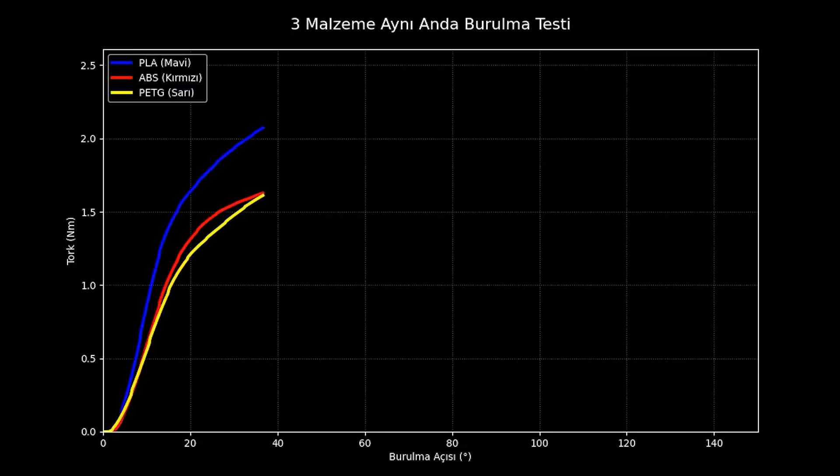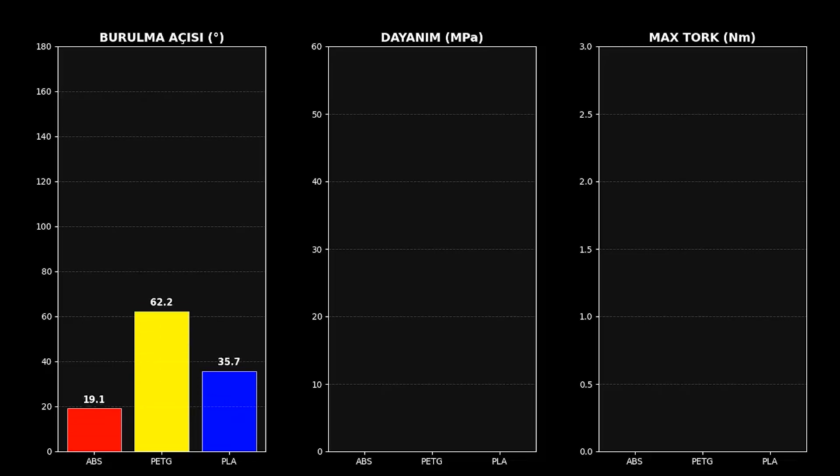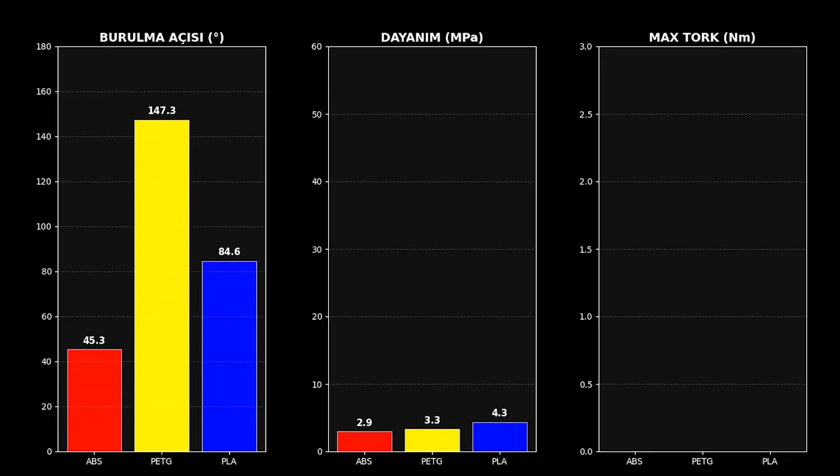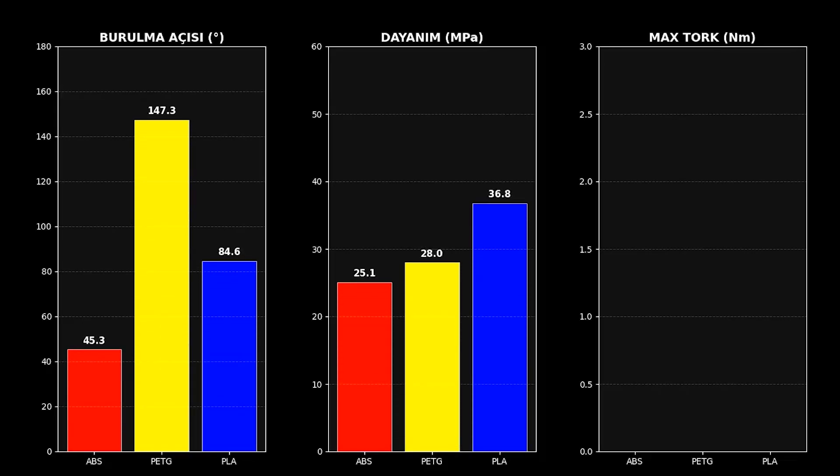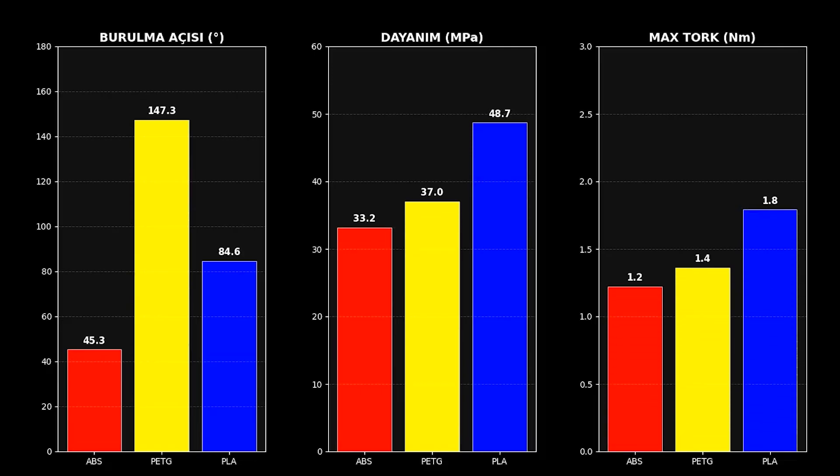Now, let's look at the grand final. First, ABS, a total disappointment. Lowest torque and snapped at only 45 degrees. The tank is officially scrapped. Weak.